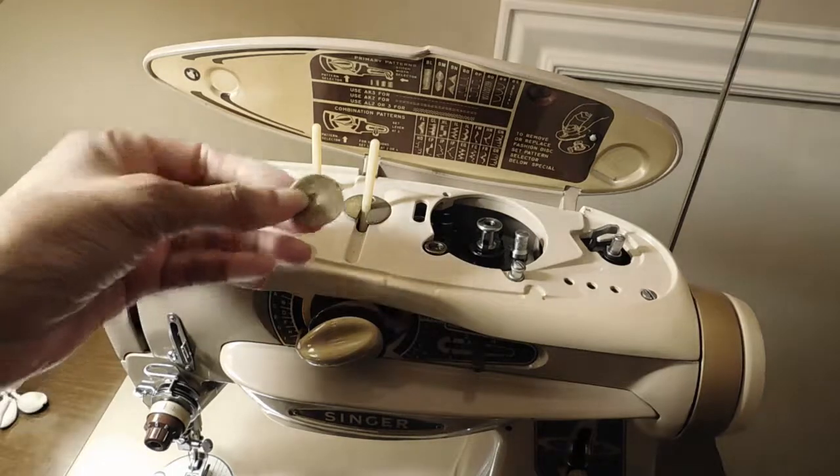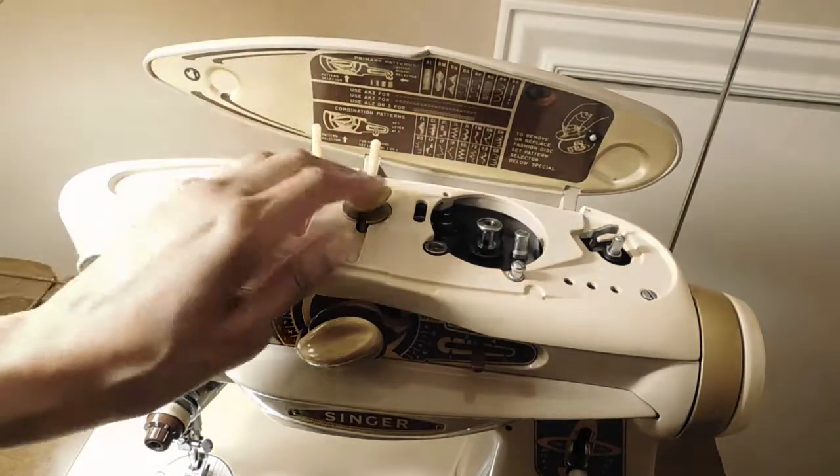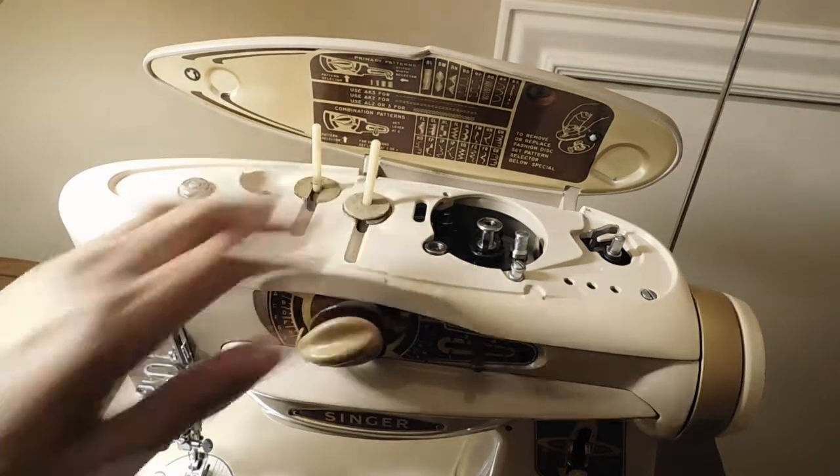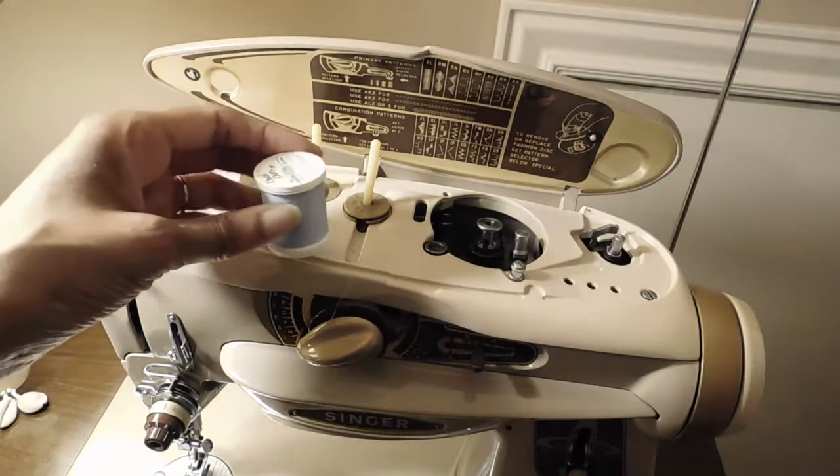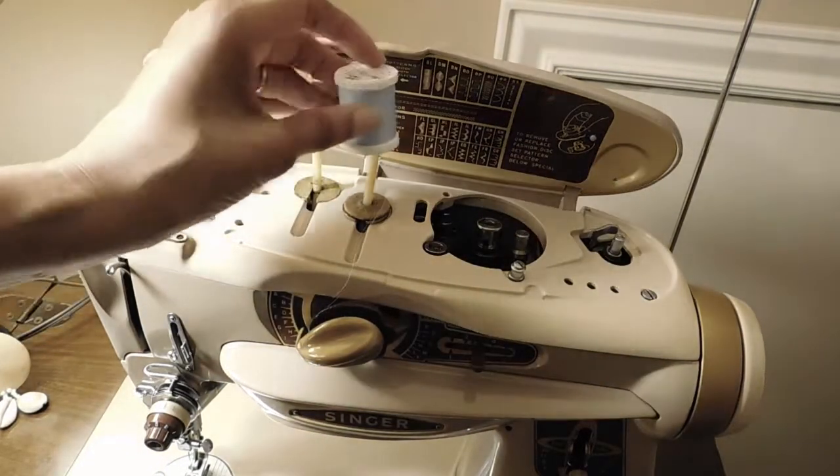Here I have a felt I will place on the spindle. This is to help hold the spool of thread in place. Take your spool of thread right side up and place it on the spindle.